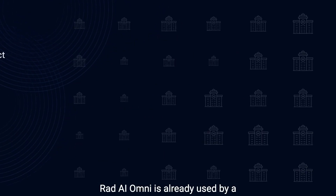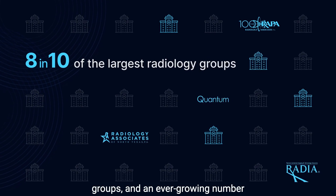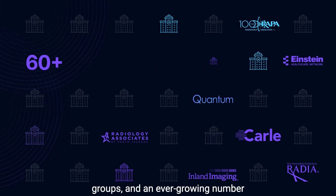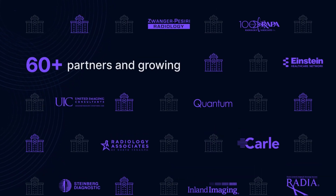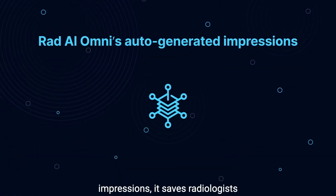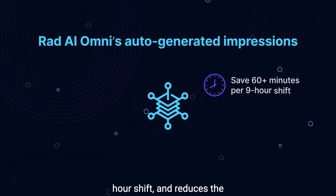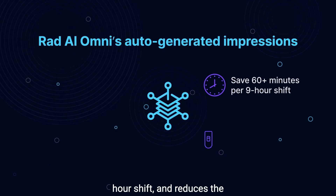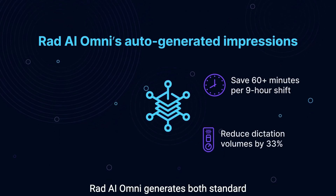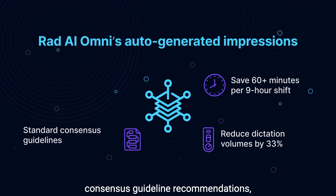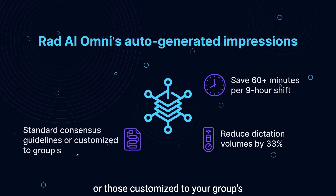RAD AI Omni is already used by a vast majority of the largest radiology groups and an ever-growing number of practices across the country. By automatically generating impressions, it saves radiologists a median of one hour per nine-hour shift and reduces the number of words dictated. RAD AI Omni generates both standard consensus guideline recommendations or those customized to your group's preferences.